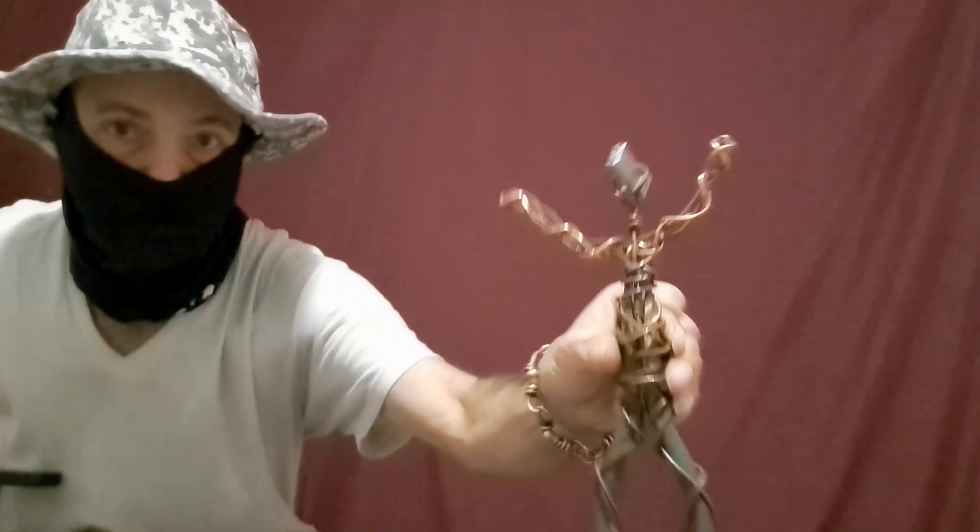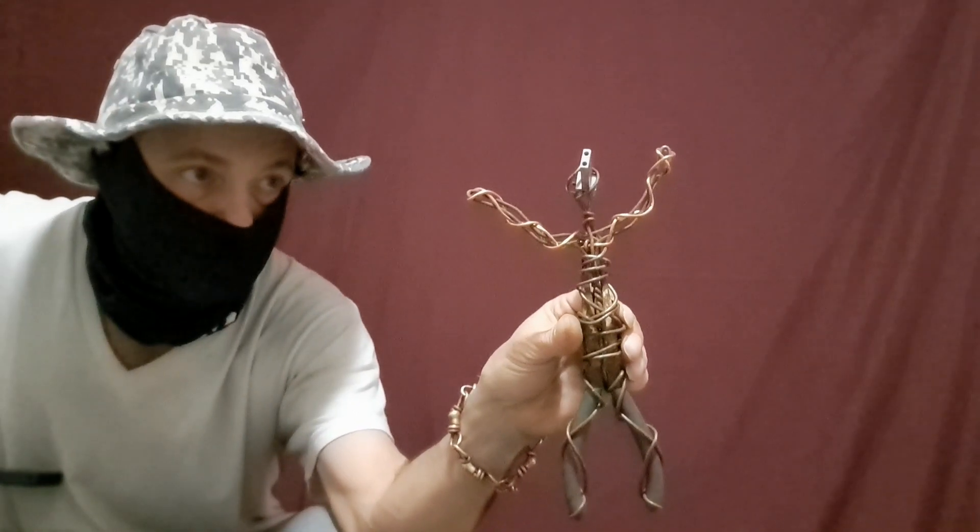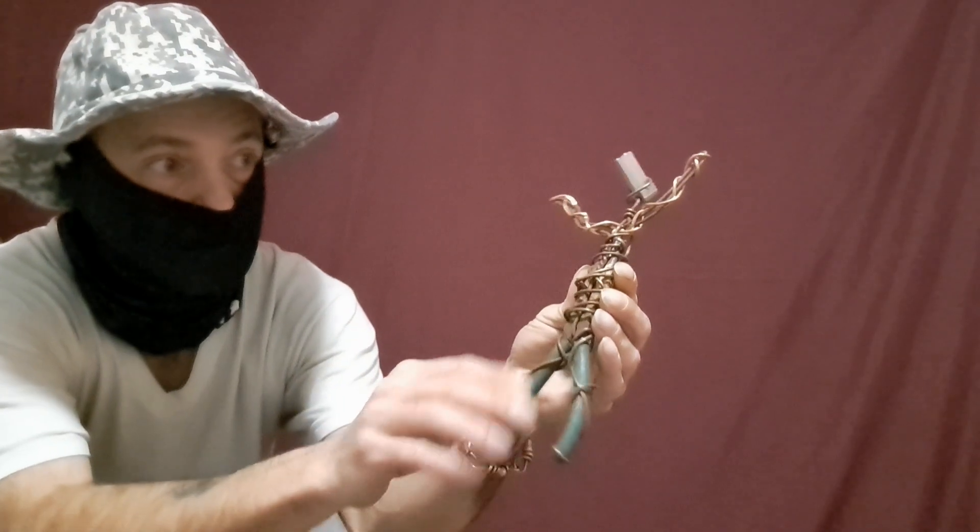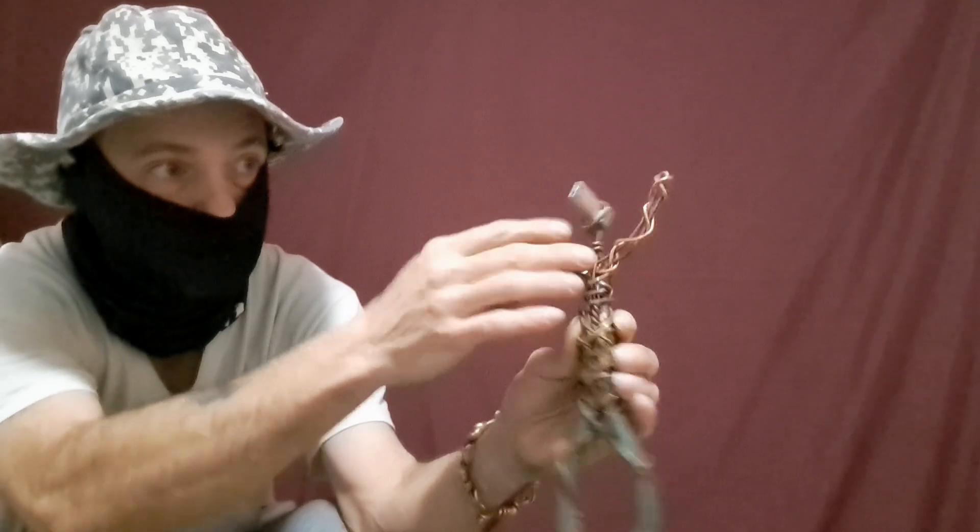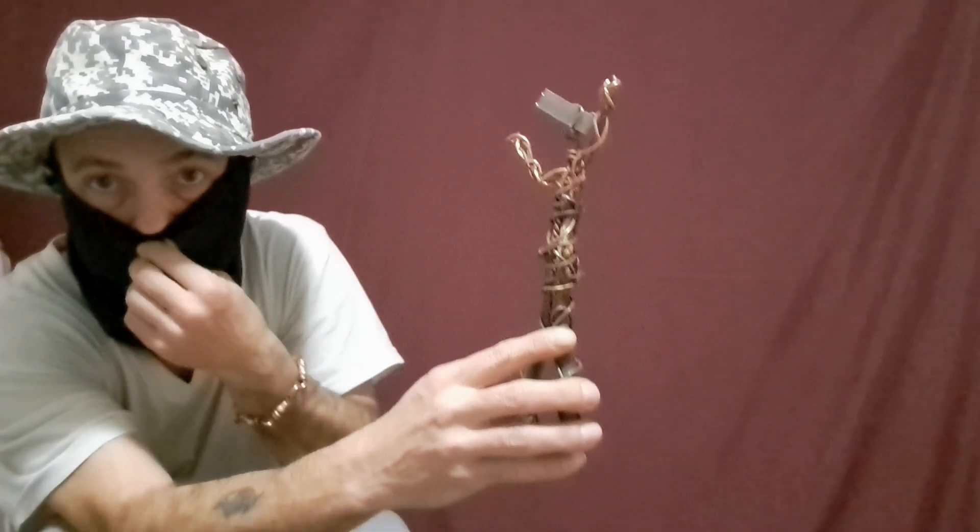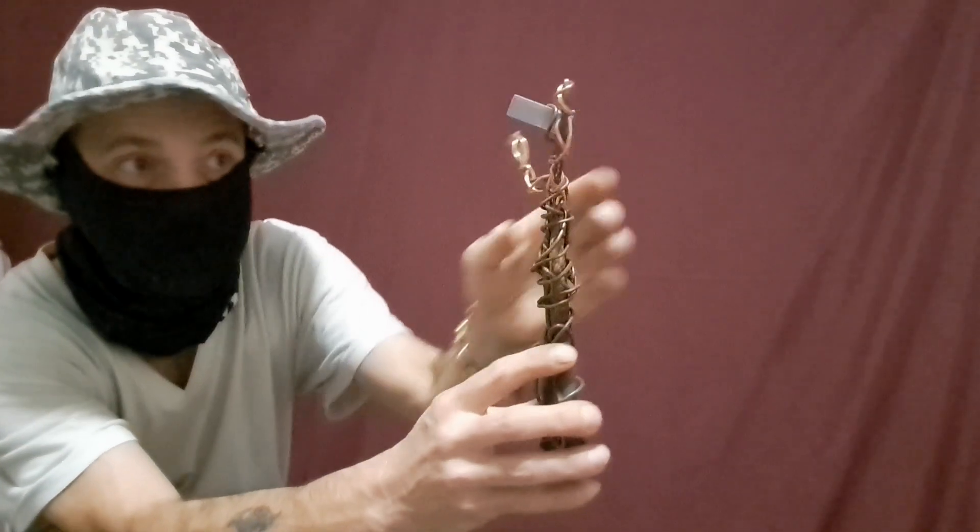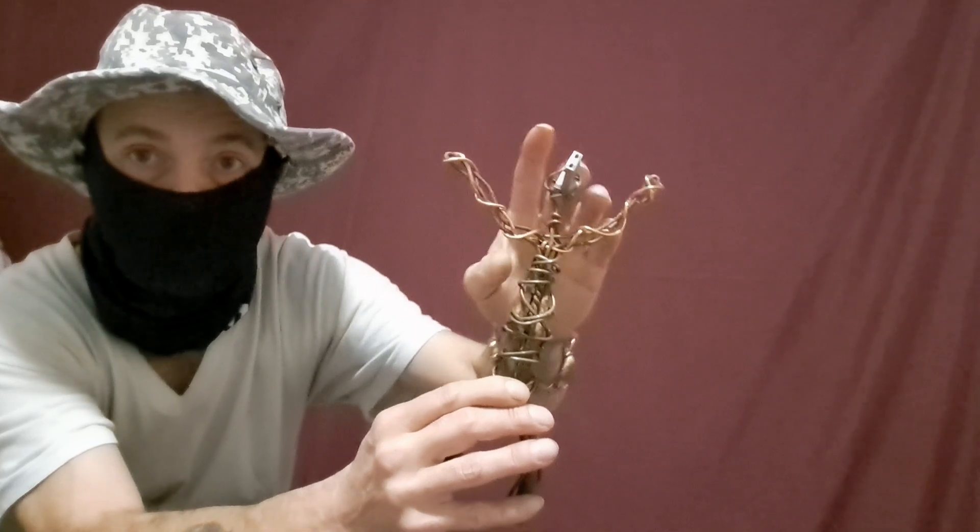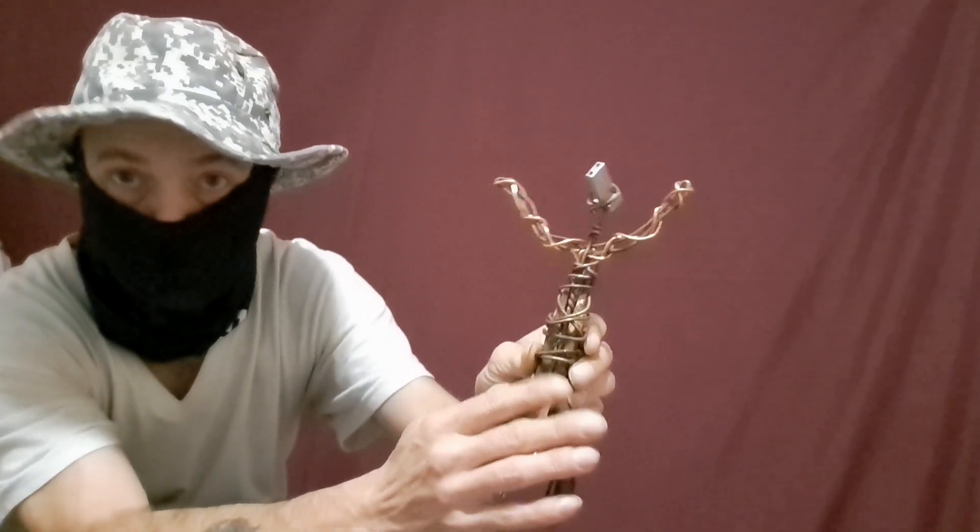This guy does not have a name. He's made with pliers, clothes hangers, a little bit of copper there. And these, I don't know what those pieces are. One of the twins gave them to me in a box of junk. And there was so many of them, I've been using them as heads.